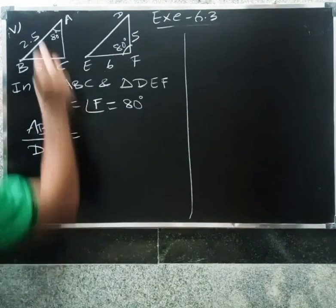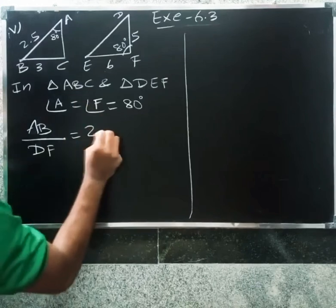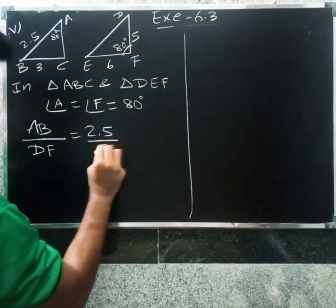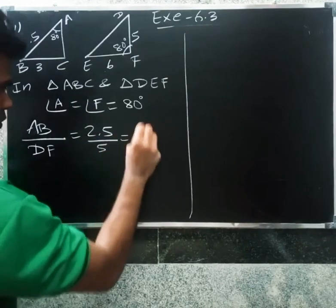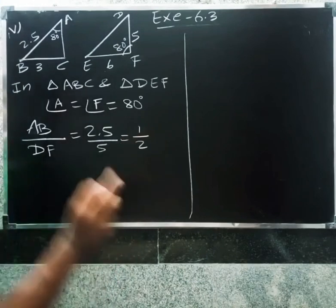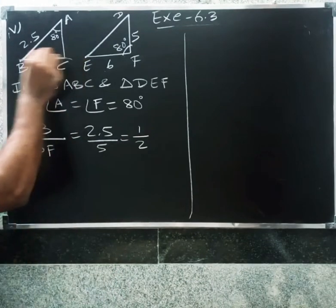AB by EF equals 2.5 by 5 equals 1 by 2. Side condition is correct so far.